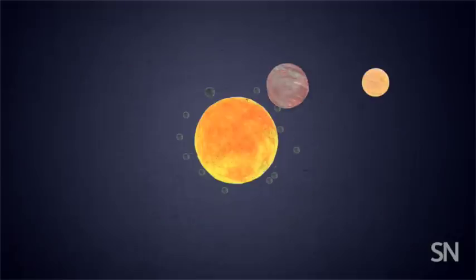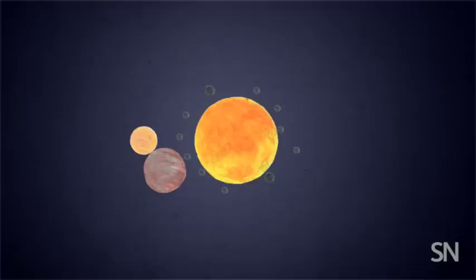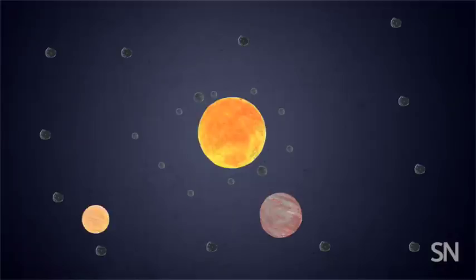A few thousand years later, the sun pulls Saturn inward, too. But Saturn starts crowding Jupiter. It gets all up in Jupiter's space. Their close gravitational dance flings them both to the outer solar system.